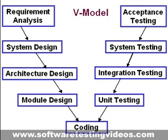The V model is a software development model which can be presumed to be the extension of the waterfall model. Instead of moving down in a linear way, the process steps are bent upwards after the coding phase to form the typical V shape. The V model demonstrates the relationship between each phase of the development lifecycle and its associated phase of testing.